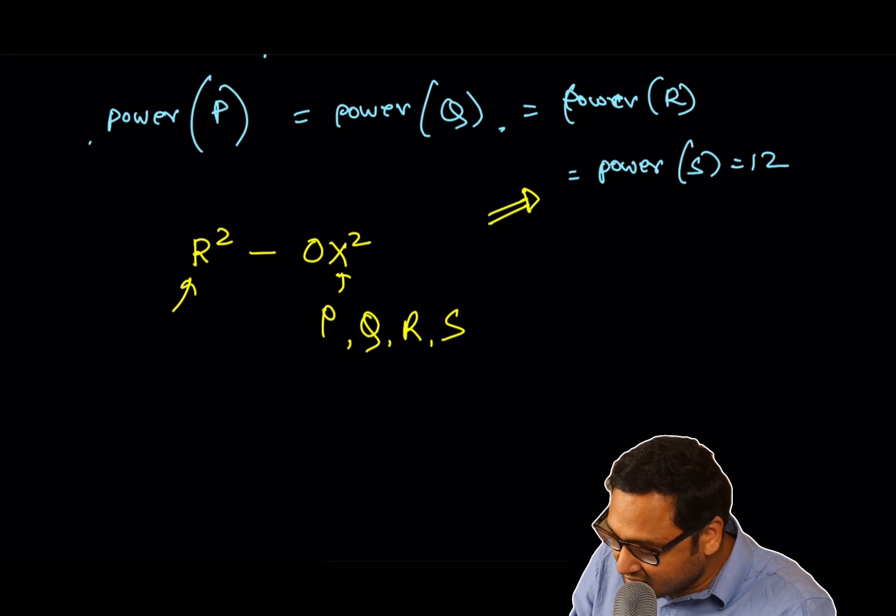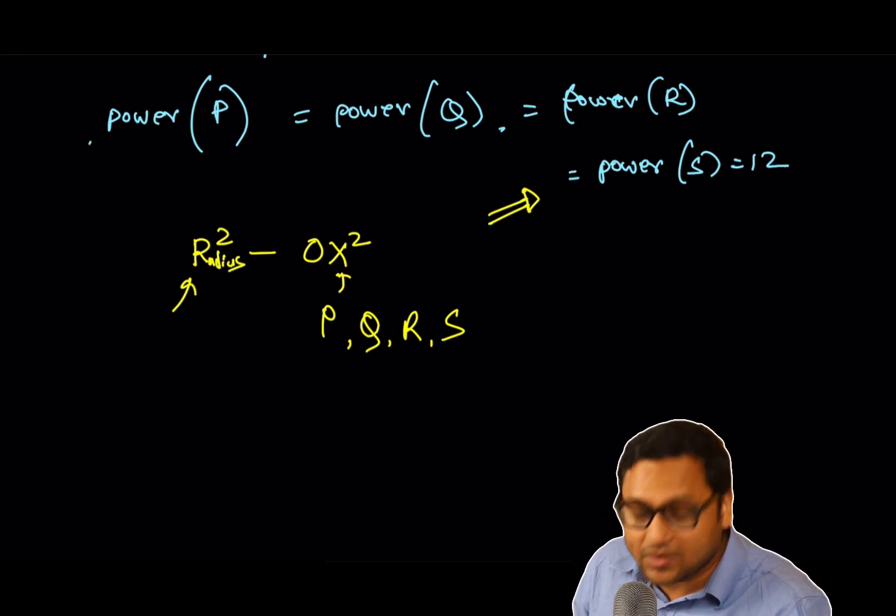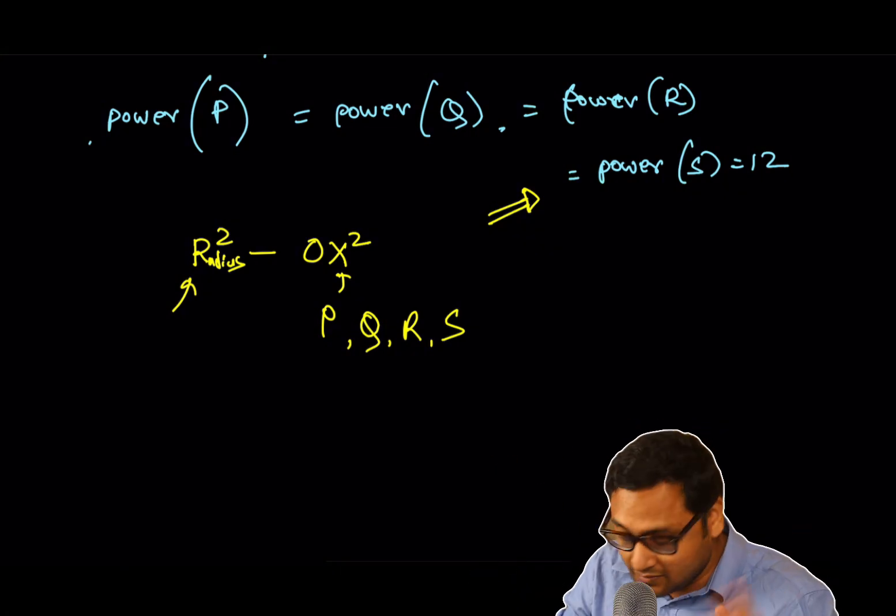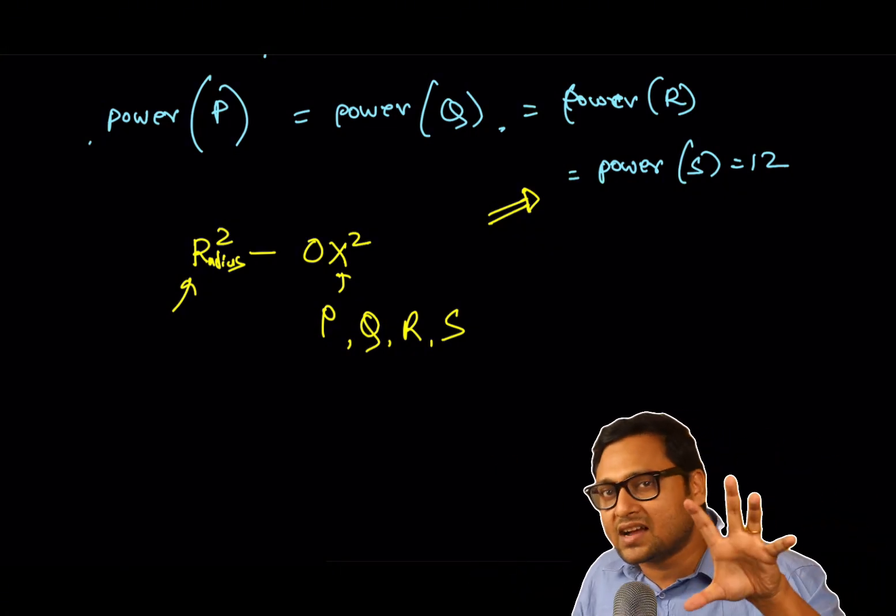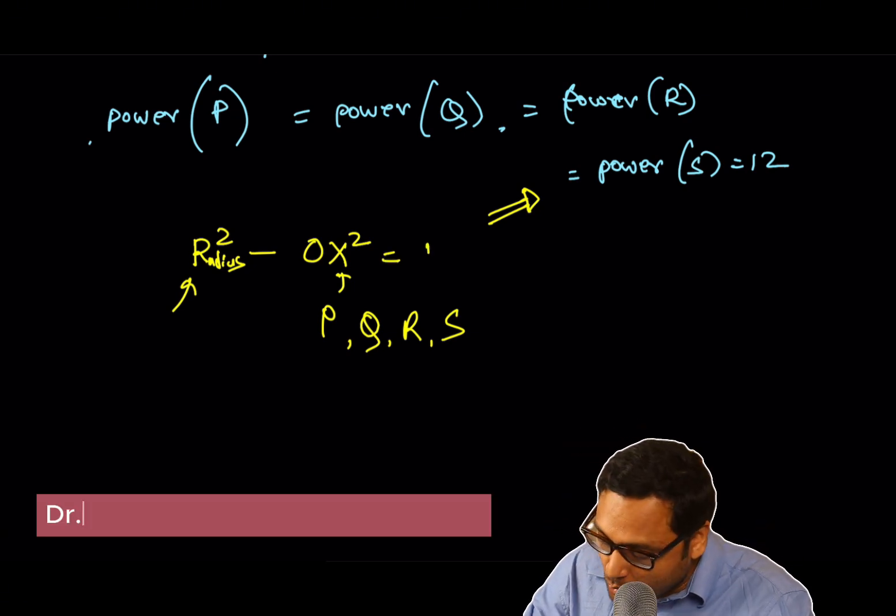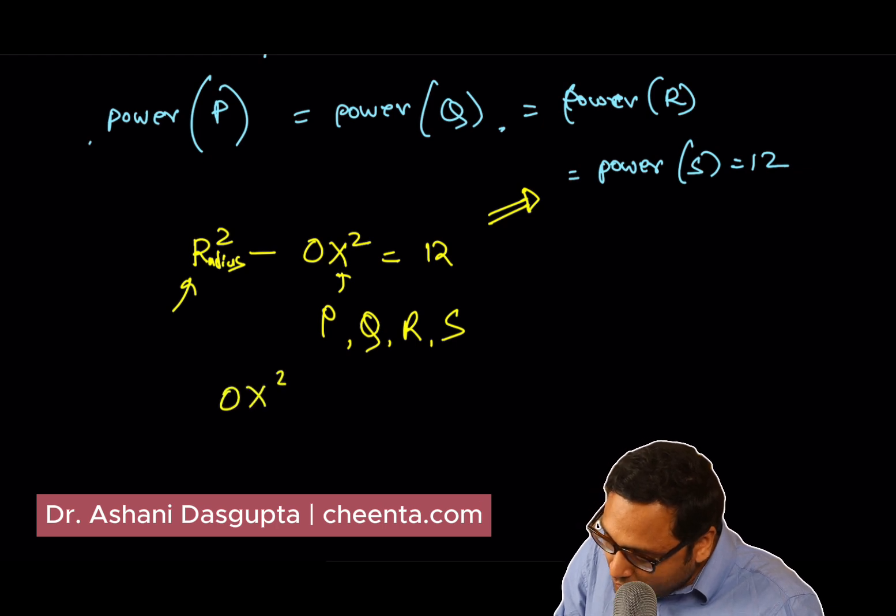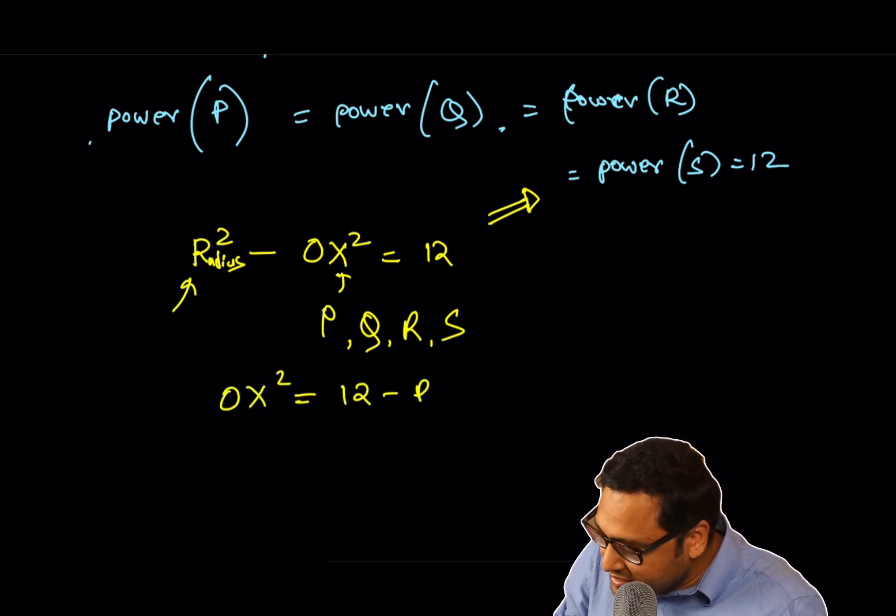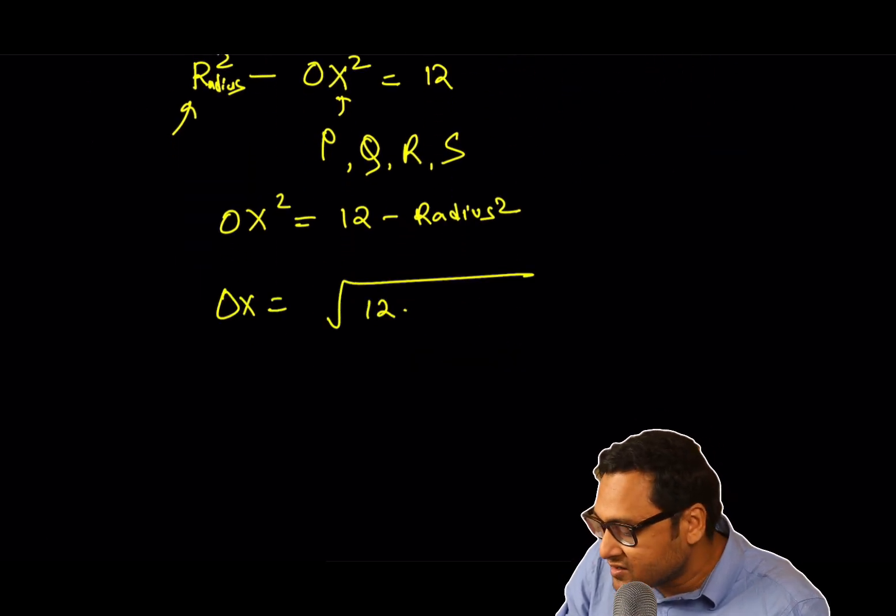And what is R? R is the, well, maybe you will get confused. So I'll just write radius. What is the radius? Radius is of the main circle. So radius square, whatever the value of the radius is, it's one circle, so one radius value. Minus OX square is equals to 12. So what is OX square? OX square is 12 minus radius square. So OX is equal to square root of 12 minus radius square.